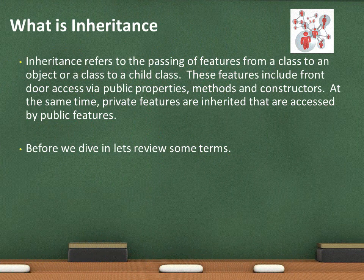Inheritance refers to the passing of features from a class to an object, or from a class to another class. These features include front-door access to that class via things like properties, methods, or constructors — things we should have already covered. At the same time, private features are inherited that are accessed by public features.